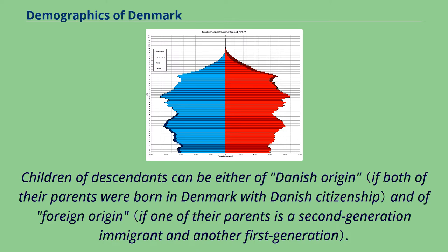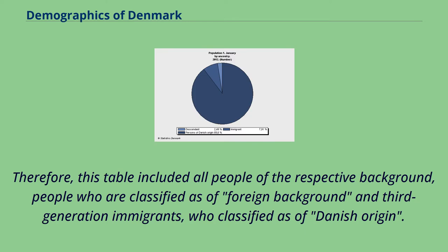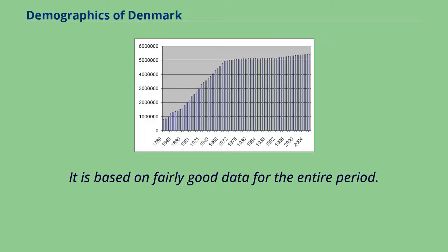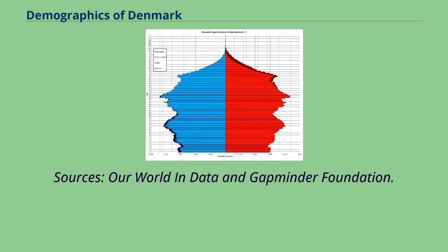This table includes all people of the respective background — those classified as of foreign background and third generation immigrants classified as of Danish origin. The total fertility rate is the number of children born per woman, based on fairly good data for the entire period. Sources are Our World in Data and the Gapminder Foundation.